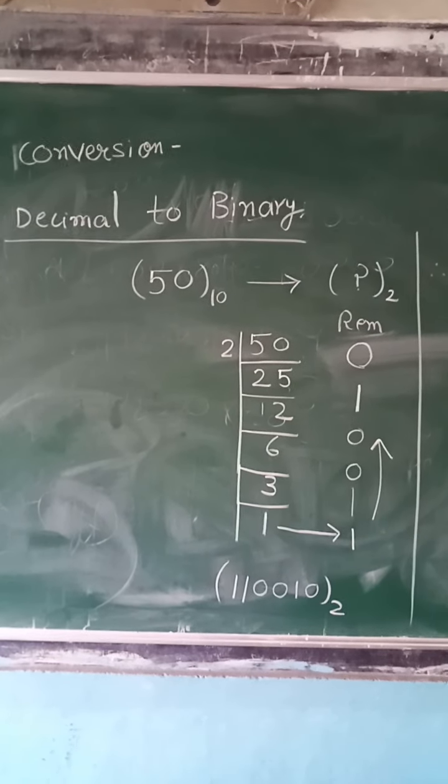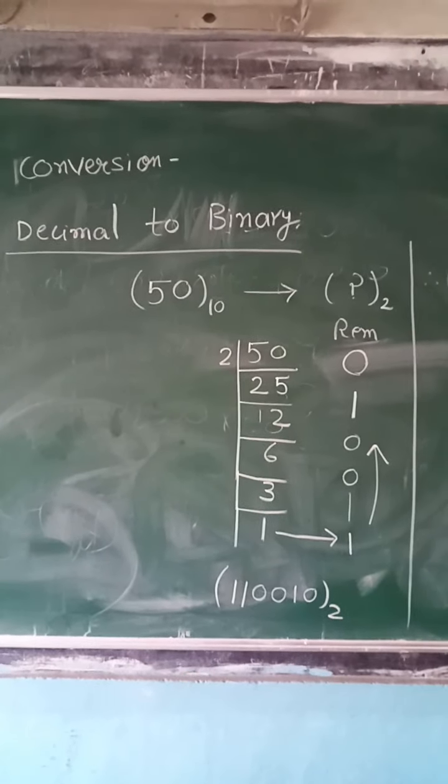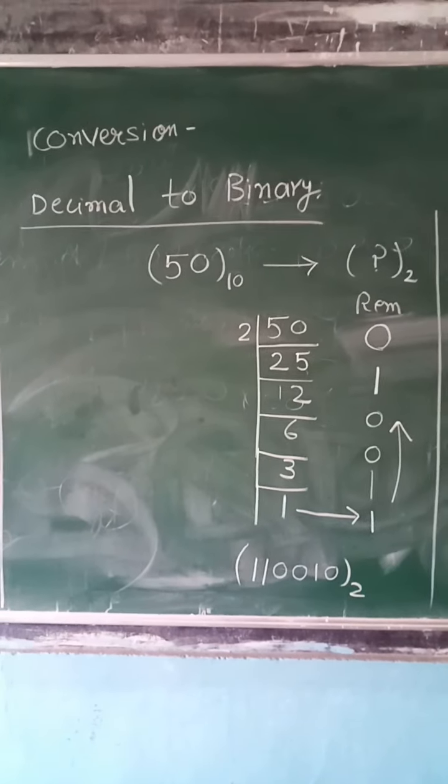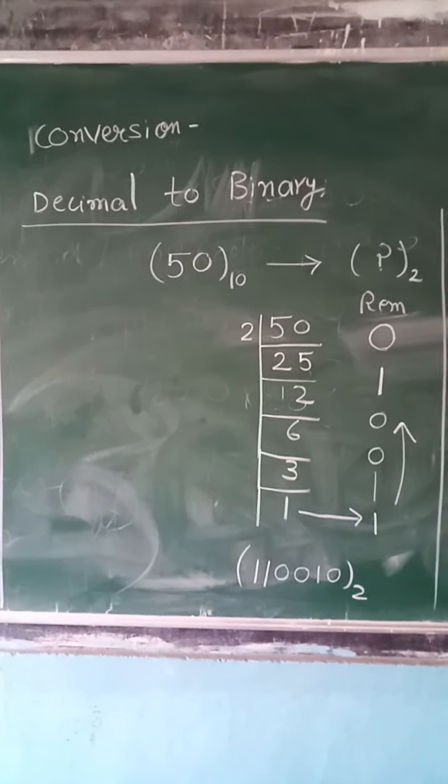Similarly, 6 is divided by 2, then you will get remainder 0, then 3 is divided by 2. Now remainder is 1.